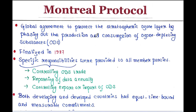So basically, the Montreal Protocol is a global agreement to protect the stratospheric ozone layer by phasing out the production and consumption of ozone-depleting substances.